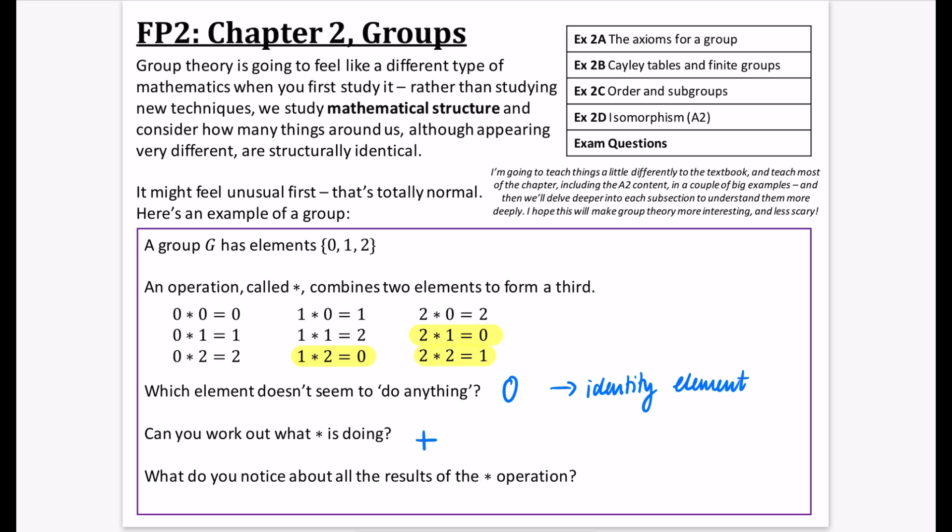I wonder if we can think about what might have gone on here. 1 plus 2 and 2 plus 1, we would expect it to be 3, but it's given us 0. And 2 plus 2 would expect it to be 4, but it's given us 1. This has given us something where it's adding, but it is adding it with a modulo 3. This is addition modulo 3. Anytime that it goes above 0, 1 or 2, it kind of loops back around. So 1 plus 2 would be 3, and the remainder when divided by 3 is 0.